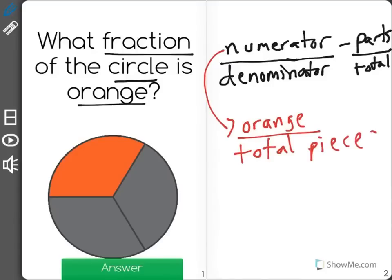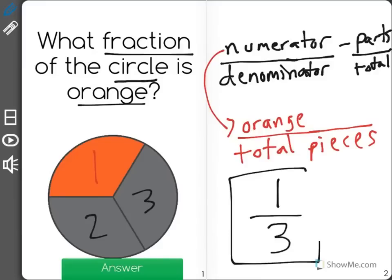So the way we write this fraction, I see one orange piece, one will be our numerator, and there are three pieces total. Three is our denominator. That means that one-third, or one over three of the circle is orange.